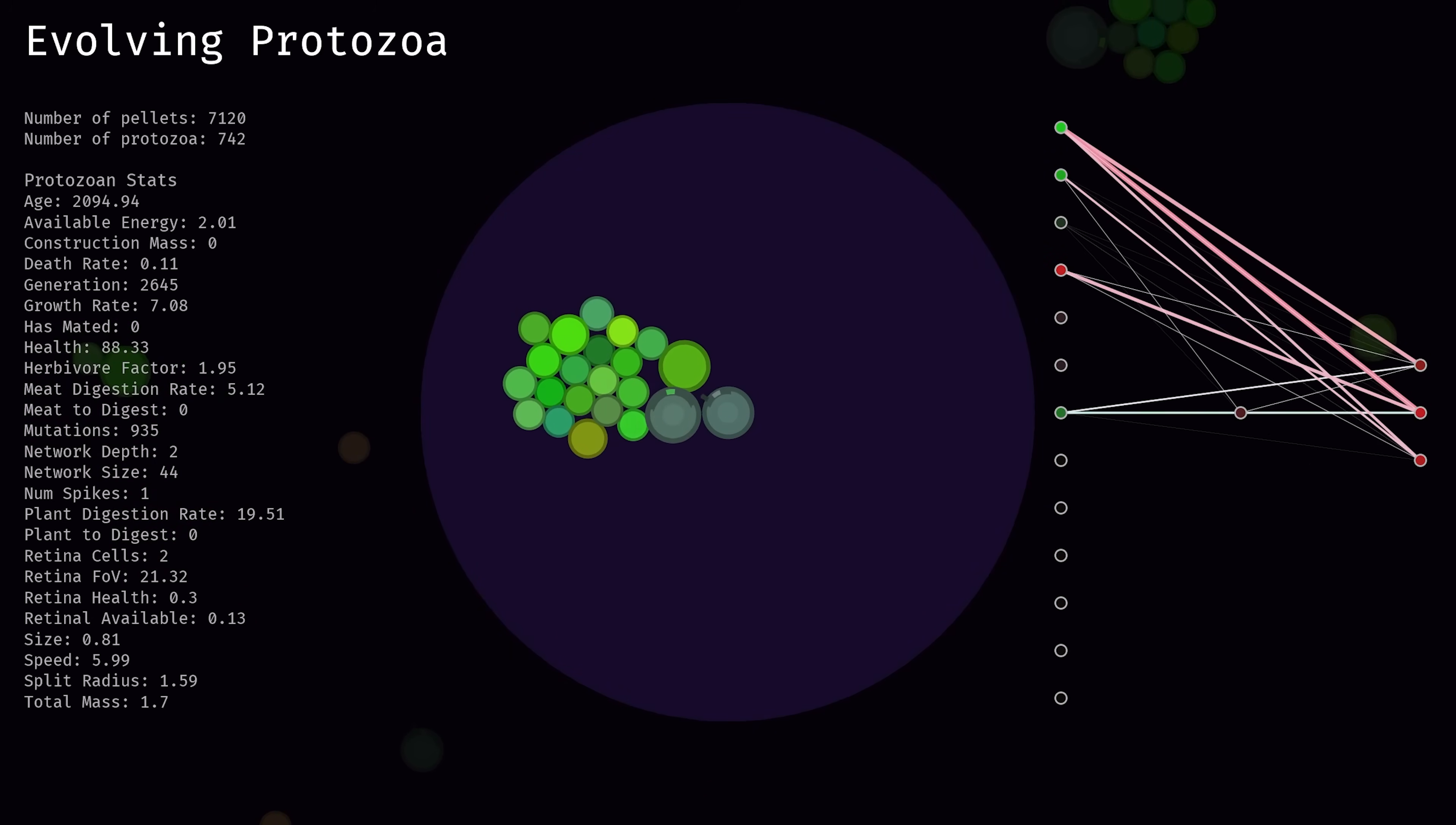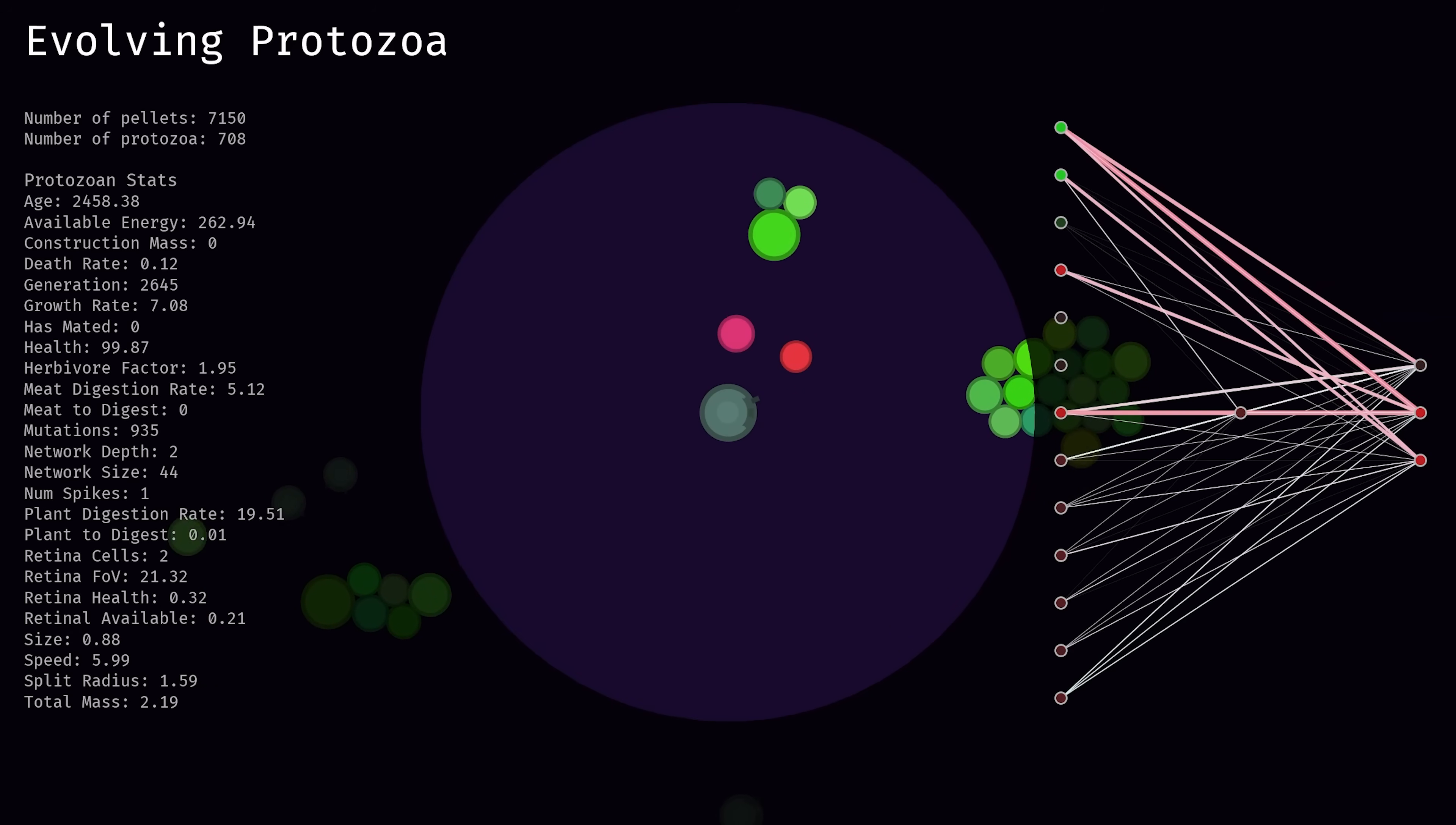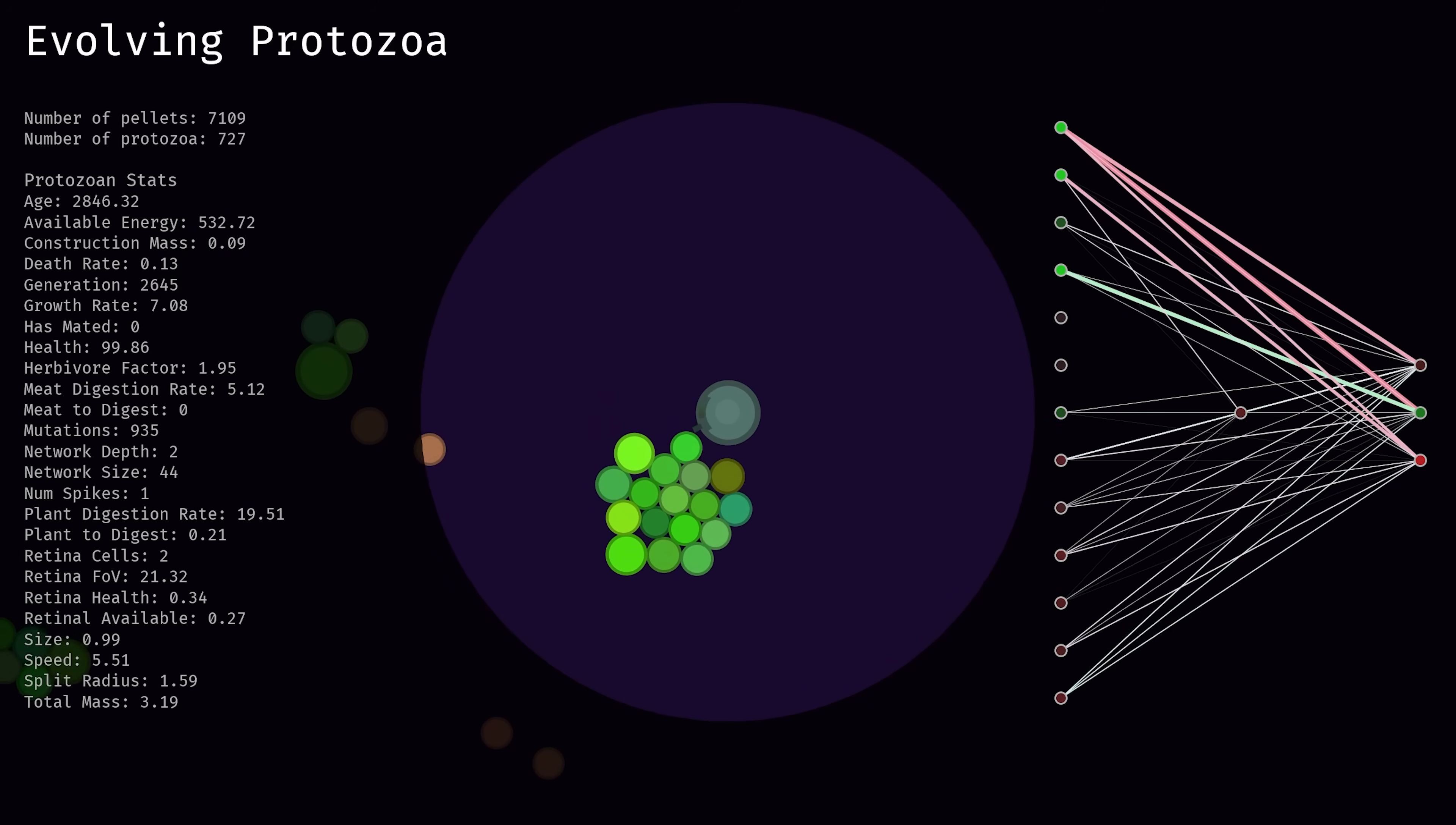In order to survive and reproduce, first and foremost a protozoan must collect mass and energy from its surroundings. The simplest way to do so is by harvesting it from the green plant cells that are floating around in their environment. Plant cells themselves can have their own complex dynamics and must also grow and reproduce, but in the current iteration they do not have evolvable traits.